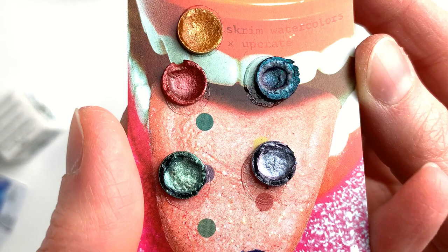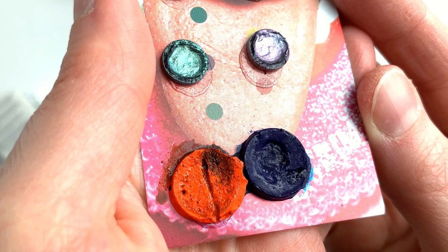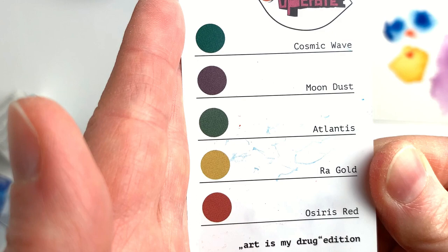The closest I could find is that Scrim has a similar orange and blue on their website, pyrrole orange with the pigment PO73 and phthalo blue with the pigment PB15:3.